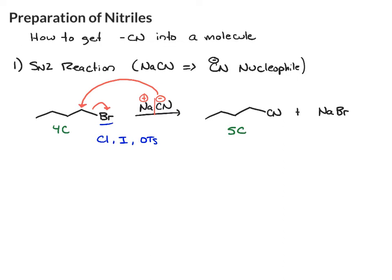Just to refresh for the SN2: the carbon containing a leaving group must be sp3 hybridized, and it can be methyl, primary, or secondary. In this case, this is a primary bromide.